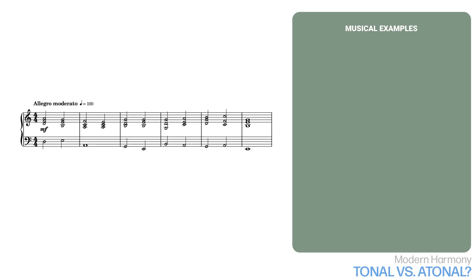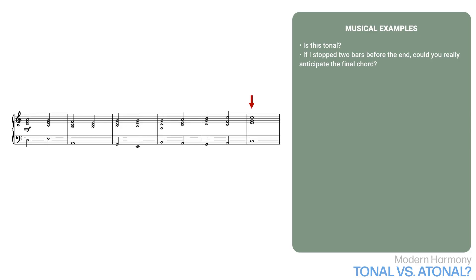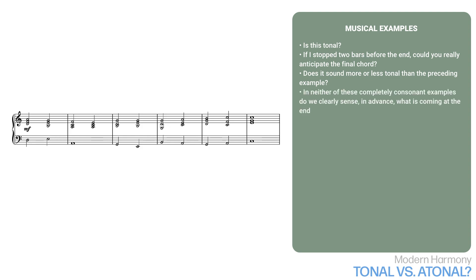Here's a musical example. Is this tonal? Well, the chords are all consonant, and all the notes belong to the C major scale, but it doesn't start and end on the same chord, and there's no strong feeling of harmonic direction. If I stop two bars before the end, could you really anticipate the final chord? Here's the same example, only the last chord is different. Does it sound more or less tonal? In neither of these completely consonant examples do we clearly sense, in advance, what's coming at the end. So our first conclusion is clear: consonance alone doesn't create a sense of tonal direction.